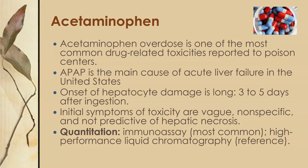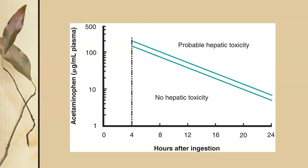The initial symptoms are not predictive of the hepatic damage that is starting to happen. To quantitate it, there are immunoassays, which are the most common and available in pretty much any clinical lab. You can also do high-performance liquid chromatography, but that would be a reference lab test. Collection time is important — if you know when a patient has taken the acetaminophen, you want to get at least a four-hour level and maybe a 12-hour level.